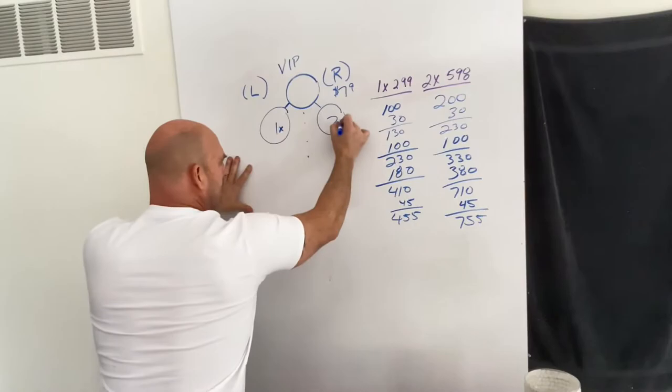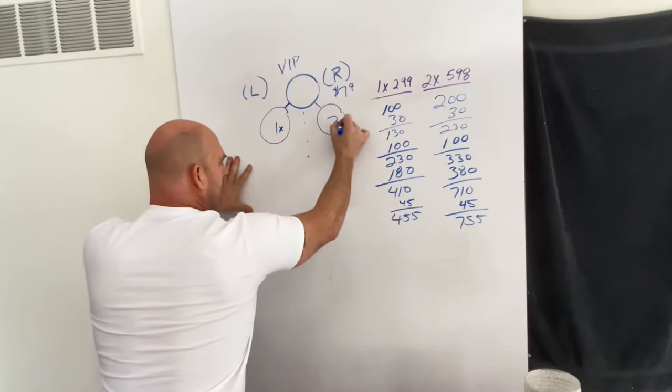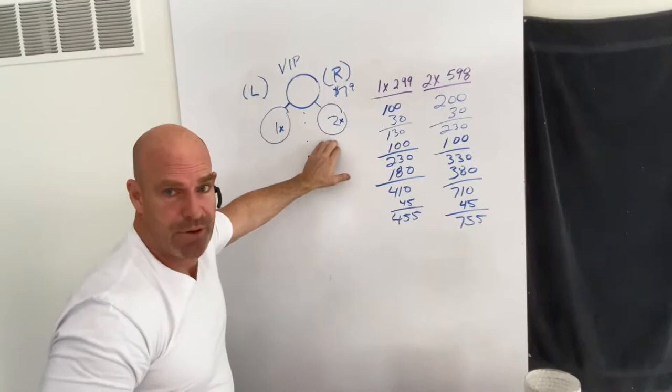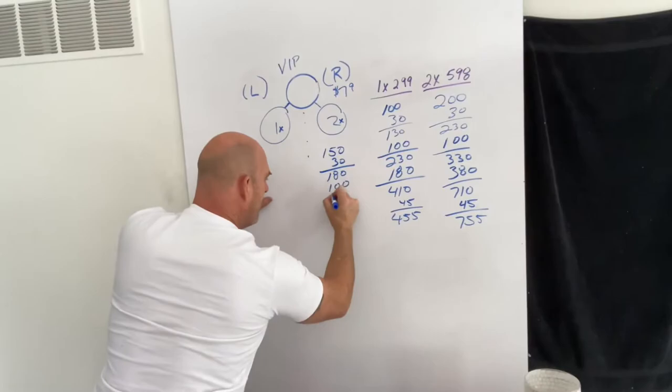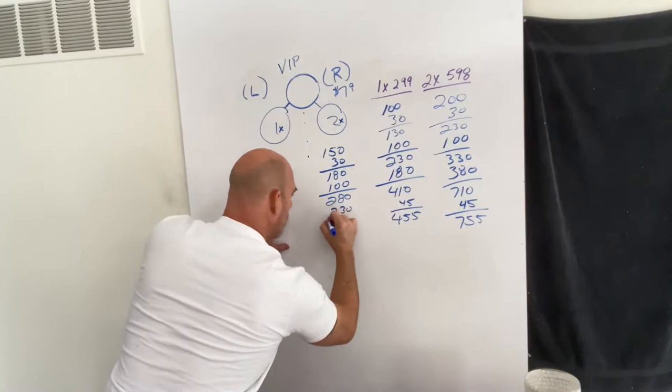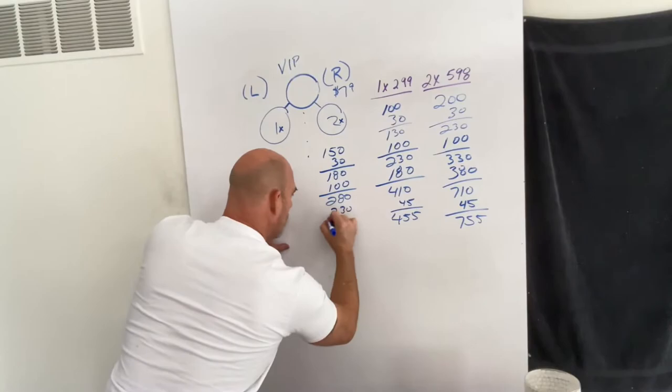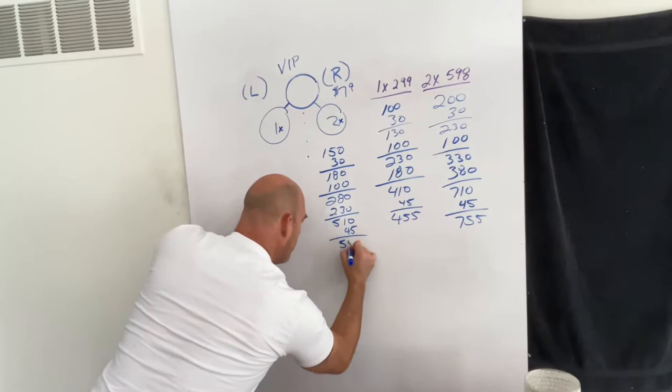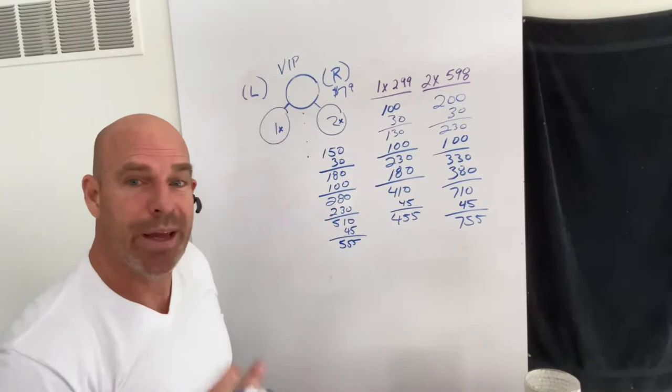What if they do a combination? What if number one does the 1x and number two does a 2x? We'll make $50 for the one and we make $100 for the two, so that's $150, plus the $30 for the two customer packs, that's $180. The one-time bonus of $100 puts us at $280, and then the bonus for being a VIP is $230 at this level. In this scenario we've made $510, but then again we get the $45 credit voucher in the back office, so we've made $555.